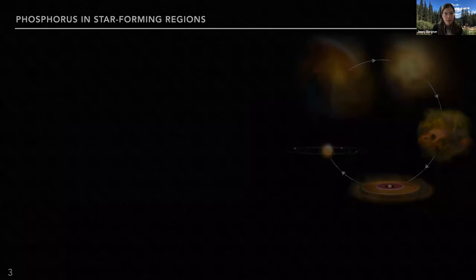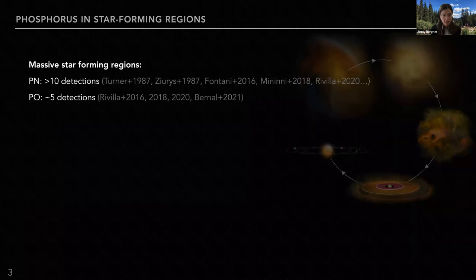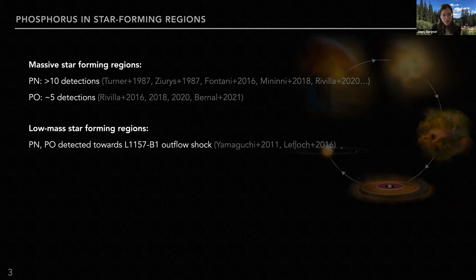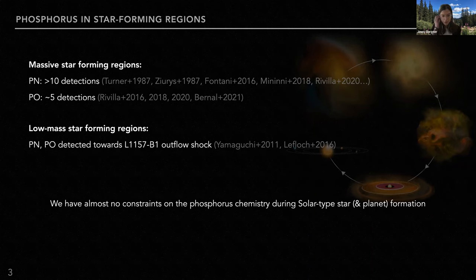A lot of detections of phosphorus carriers have been made towards massive star-forming regions. PN has been detected towards over 10 sources, PO towards a smaller but still good handful. When it comes to low-mass star-forming regions, PN and PO until recently were only detected towards a single low-mass protostar — the L1157-B1 outflow shock. This means we have almost no constraints on the phosphorus chemistry during the formation of solar-type stars and, by extension, the formation of planets.